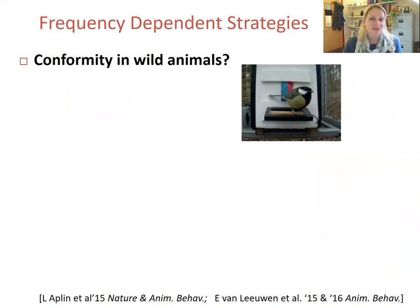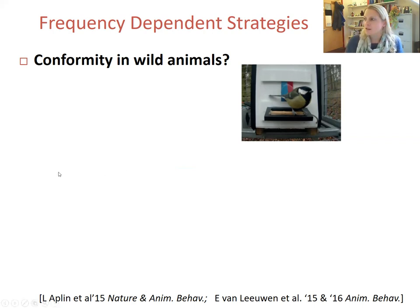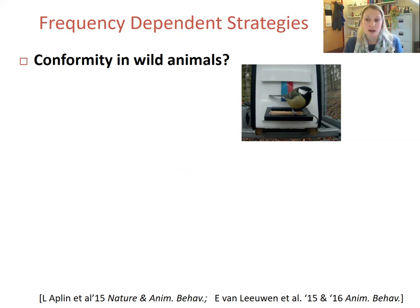As I previously mentioned, it's very difficult to study social learning strategies in wild animals. But one great example is that of Lucy Applin and colleagues who studied a population of great tits living in a wood in Oxford, UK — a population that has been studied for decades. One subpopulation was trained to push a door on a task to the left, and one subpopulation was trained to push it to the right. There was a very rapid transmission of the trait from trained innovators to the majority of individuals in each subpopulation, and pushing the door to the left, for example, remained a stable tradition over two years, despite considerable turnover due to deaths and births.